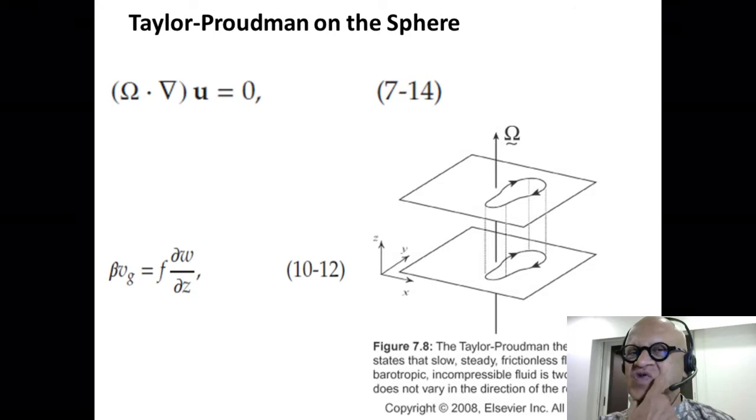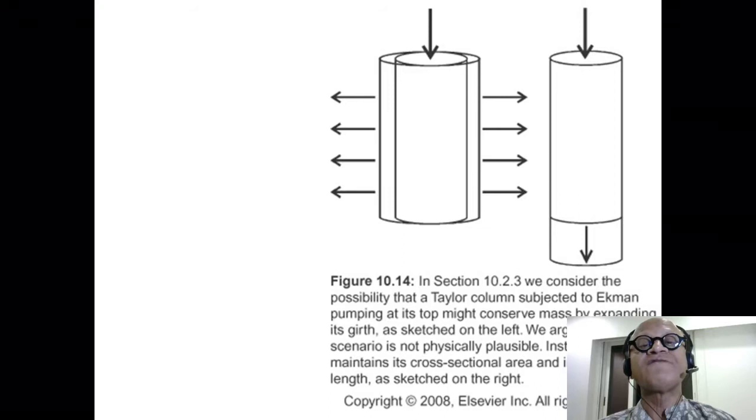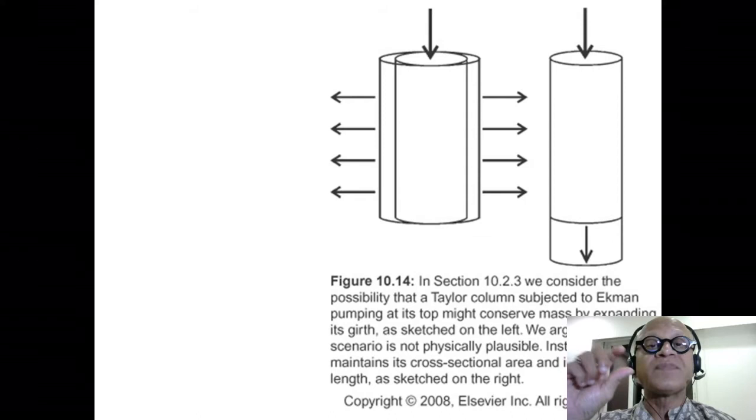So are there Taylor columns in the ocean as well? Obviously, we have shown currents which were continuous in all the oceans that we saw. So there is no stagnant column of water above the mid-ocean ridges and other ocean bottom topography features.